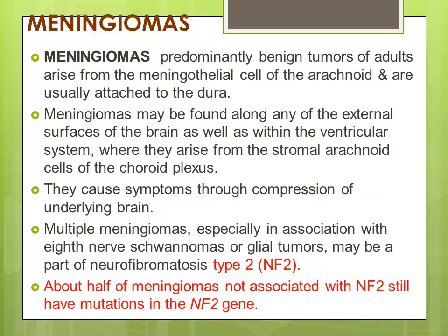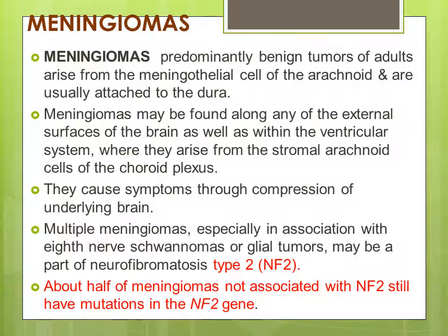Meningiomas are one of the most important CNS tumors. They are predominantly benign tumors of adults, but may be malignant in some atypical variants. They arise from meningothelial cells of the arachnoid and are usually attached to the meninges. Meningiomas may be found along any external surface of the brain or within the ventricular system. They cause symptoms resulting from compression and mass effect. Multiple meningiomas, especially associated with eighth nerve schwannoma and glial tumors, may be part of neurofibromatosis type 2.